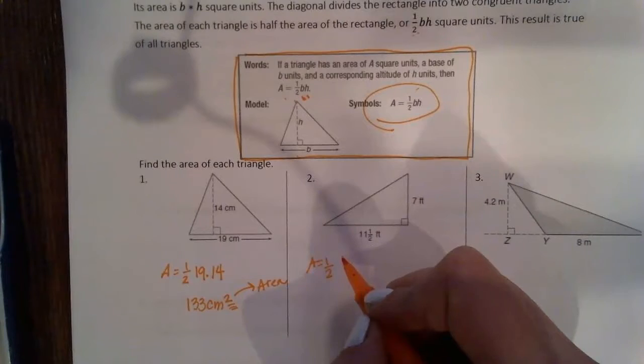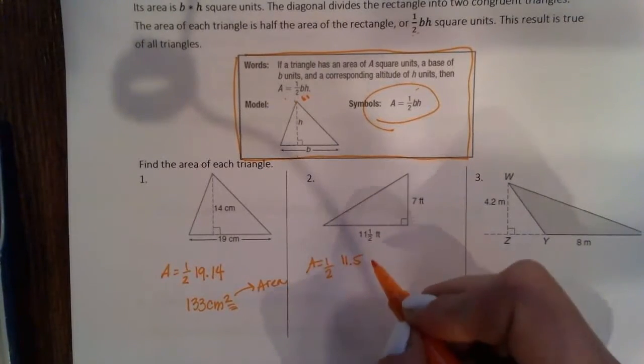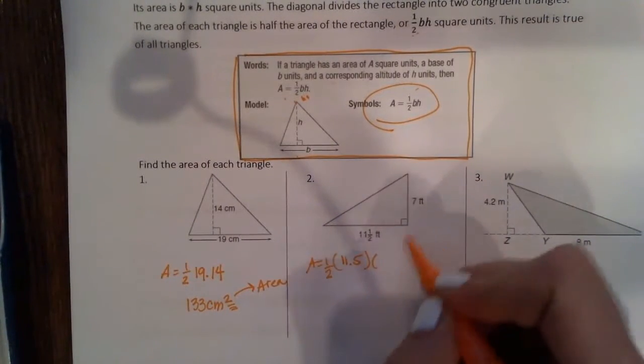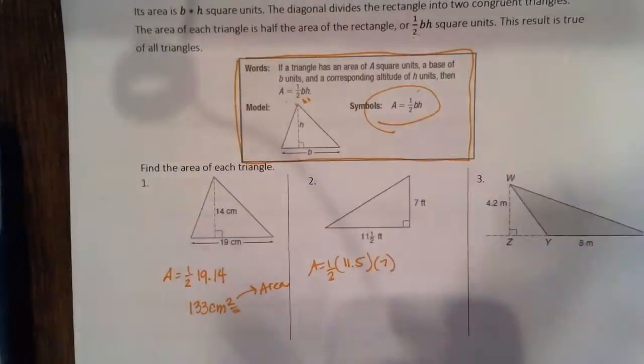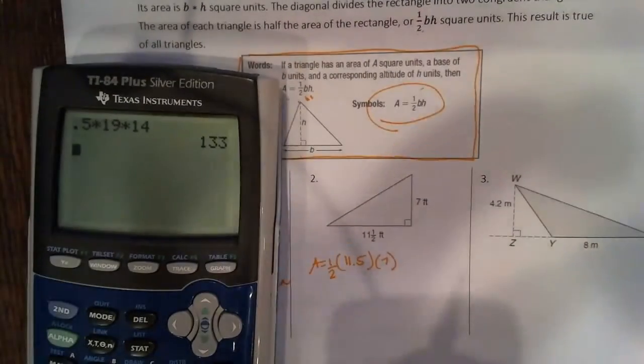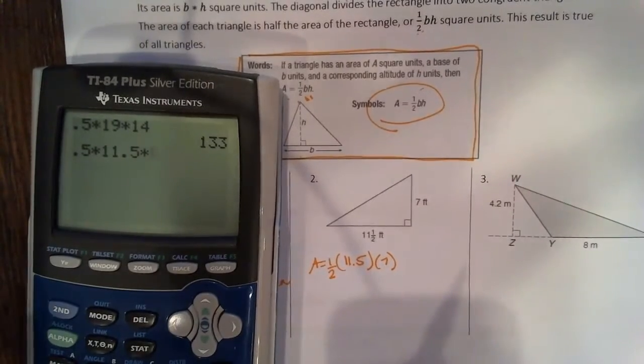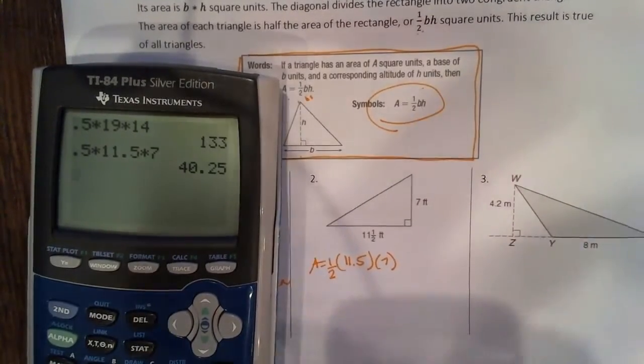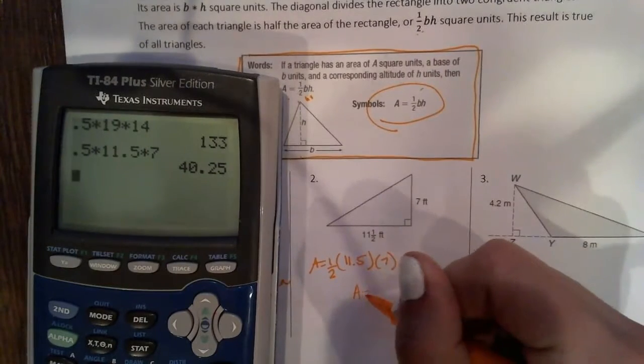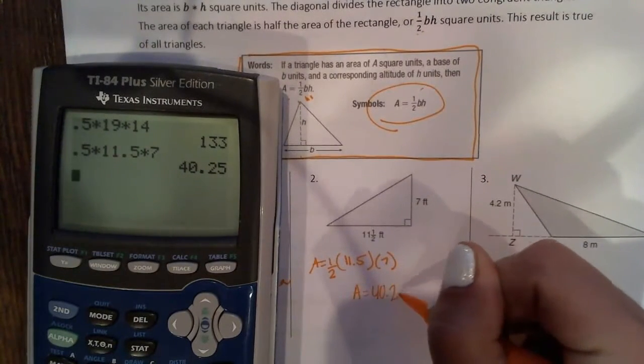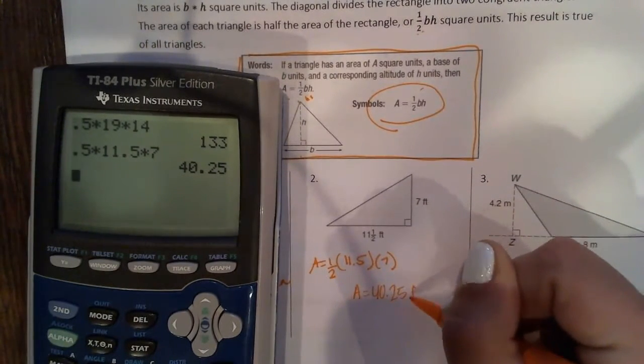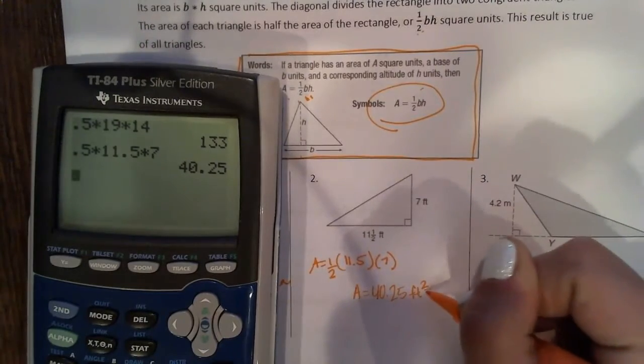Area equals one-half base times height. Multiply this in my calculator, 0.5 times 11.5 times 7. Again, my area is 40.25 feet squared. Again, it's area, so we got to have that squared.